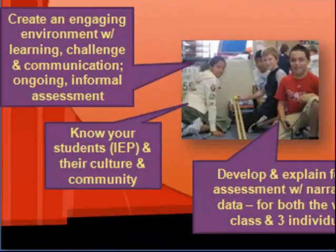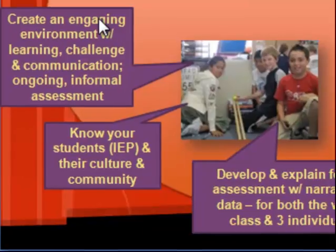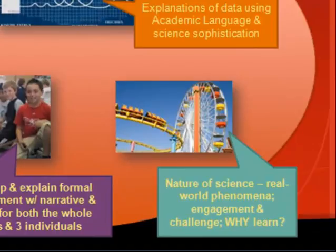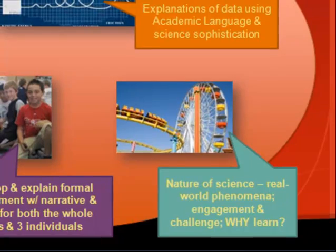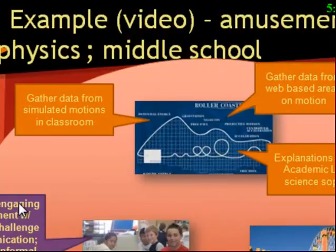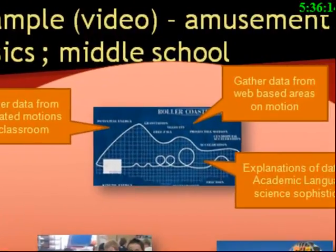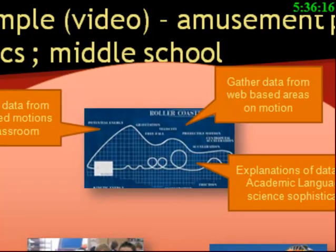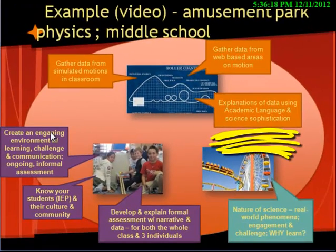For instance, if you were going to teach a middle school group physical science, you would start by understanding their culture and environment. And aside from knowing specific students, you might also consider the fact that they would have had experience with amusement parks, and that this could serve as a basis for some small experiments in the classroom that could then lead you to generating data and getting the students to explain what they're seeing using fairly sophisticated academic language.